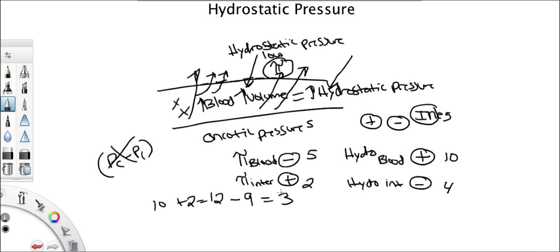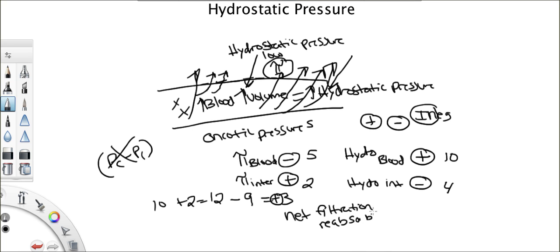The point is: is this 3 positive or negative? It's positive, because the positives outweigh the negatives. If it's positive, we have net filtration — fluid is being pushed out. It's not net reabsorption, it's filtration, because of the positive number we got at the end. A lot of questions give you these four numbers and ask you to calculate this.